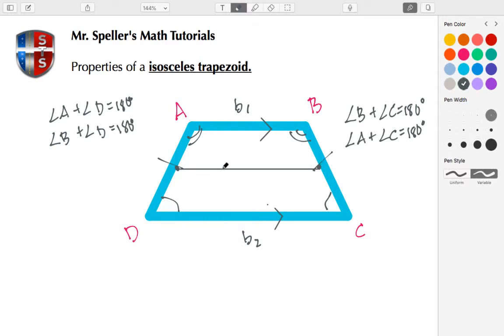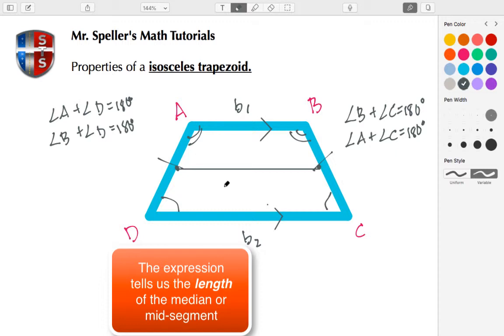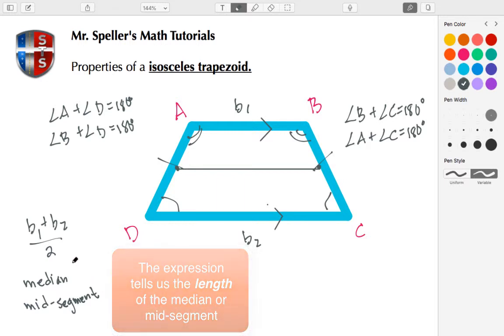And we have an expression for that. That expression is the average of base 1 and base 2. So if we take base₁ plus base₂ and divide that by 2, that gives us our median, also known as our mid-segment.